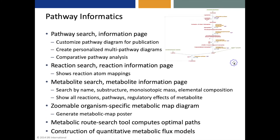The pathway informatics tools include pathway search and a pathway information page. Pathway diagrams can be customized in various ways for publication, like removing EC numbers or adding substrate structures. One can create personal multi-pathway diagrams where multiple pathways are combined together in one screen. There are comparative pathway analysis tools. There's also a reaction search capability and a reaction information page that shows reaction atom mappings. There is a metabolite search and metabolite information page with multiple different search criteria. The metabolite page shows all the reactions and pathways that a metabolite is involved in, as well as the regulatory effects of a metabolite.